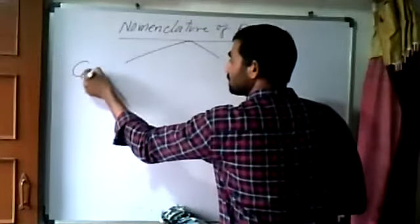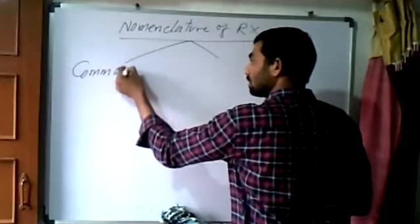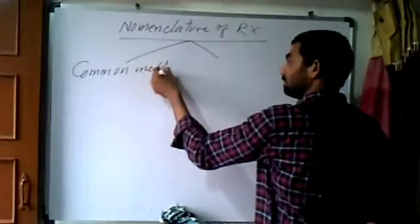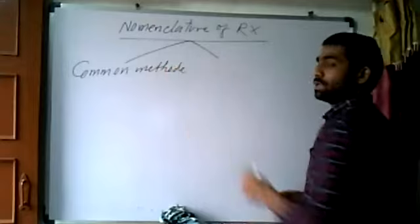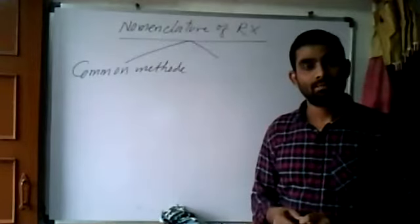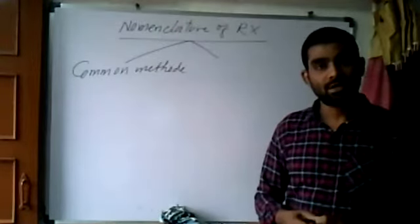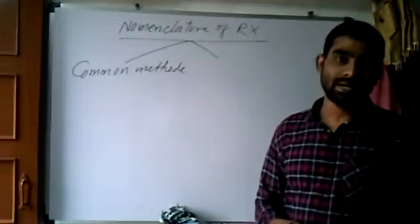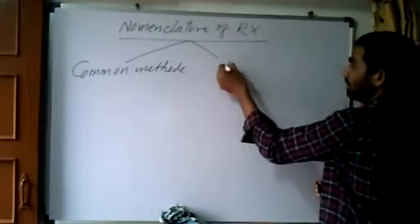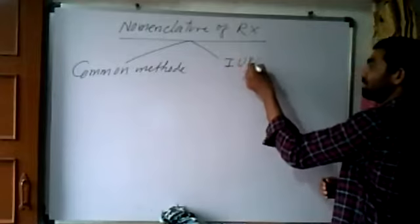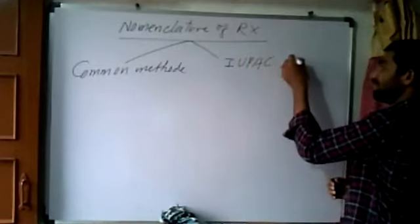Number one method is common method of naming alkyl halides. Another method is called as IUPAC method.